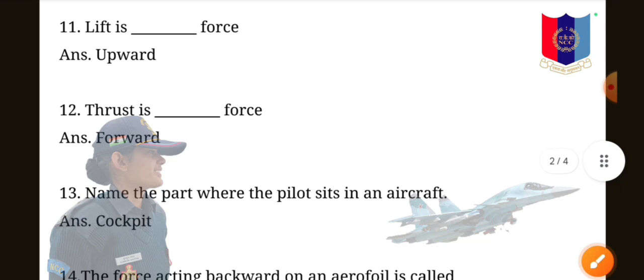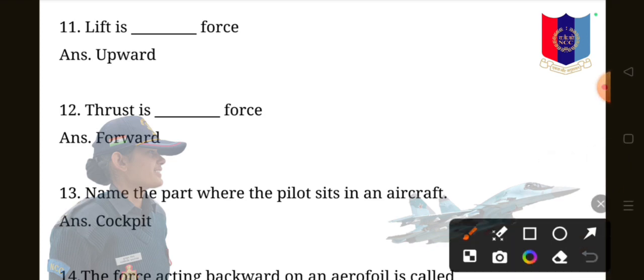Question 11: lift is dash force. Everyone knows that lift is upward force. Thrust is dash force. Thrust is forward force. Name the part where the pilot sits in the aircraft. The answer is cockpit.